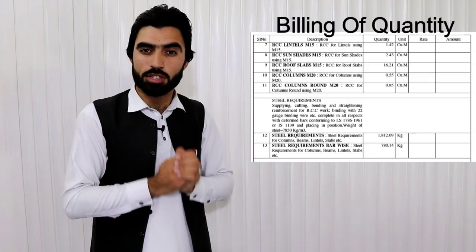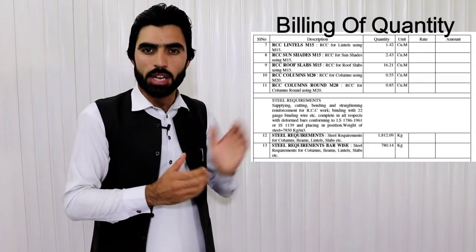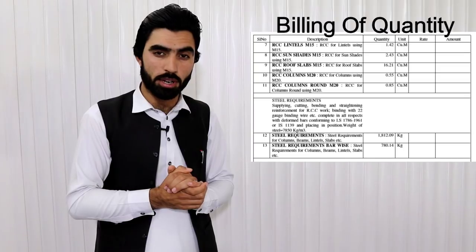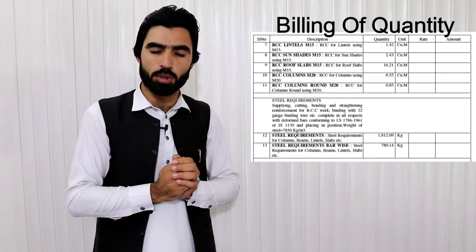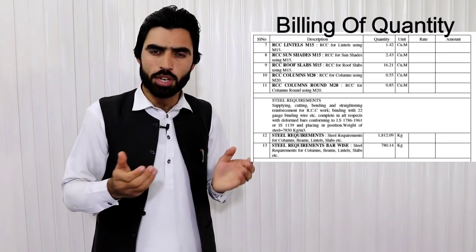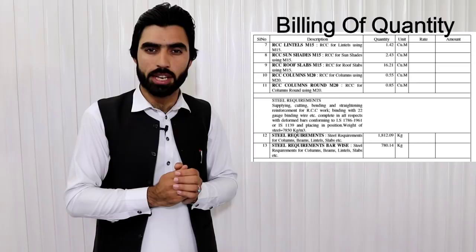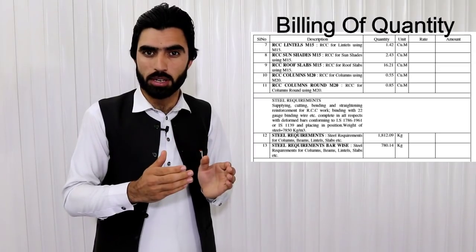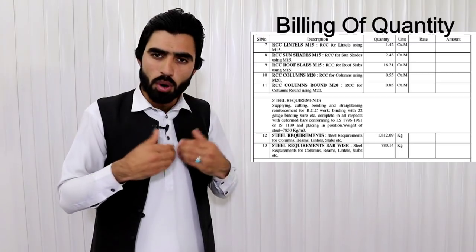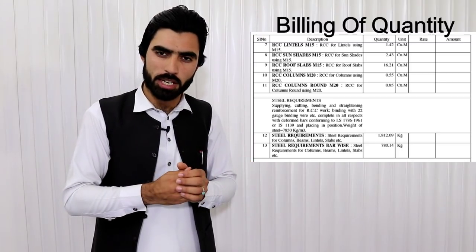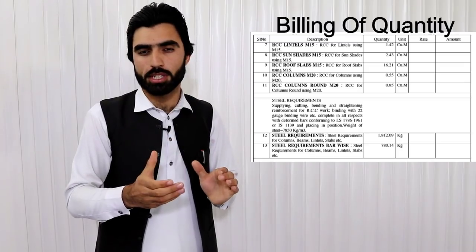You can see now on the screen — this is the list of BOQ, Bill of Quantities. The first column is the serial number. The second column is specification, where you can write the full details and full specification of any item used in building construction work, especially for brick, cement, steel, wood, and all materials used in building construction works.